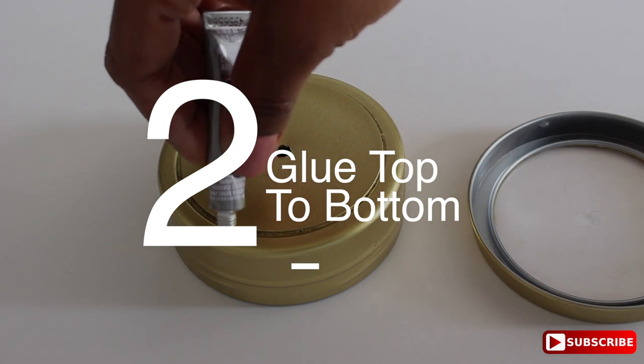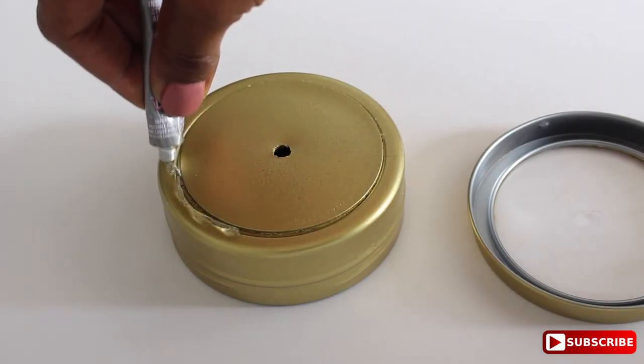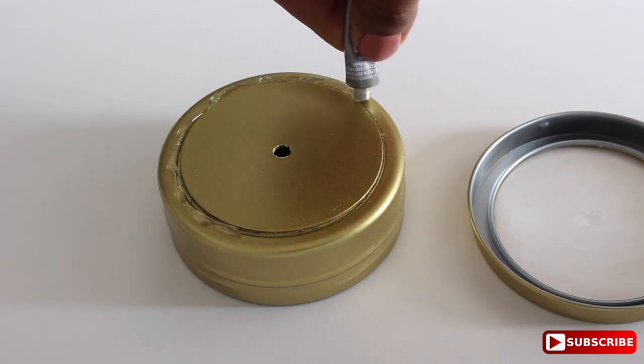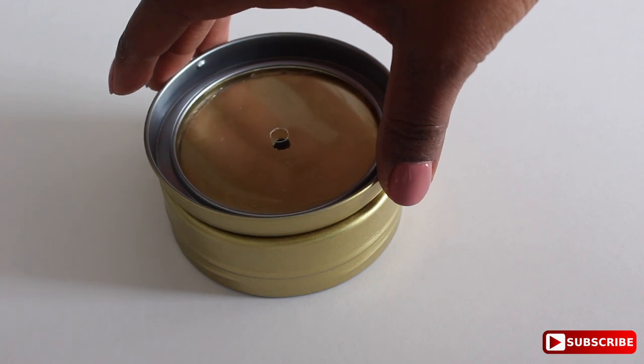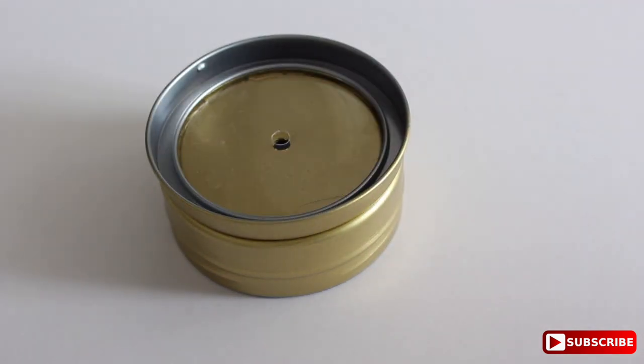Next, we're going to glue the top to the bottom and I'm using E6000 to do this. And I'm using a generous amount. You notice that I've already spray painted my container. I love gold. So you can leave it silver if you would like. And all you need to do is just place the lid on the top just like so, upside down.